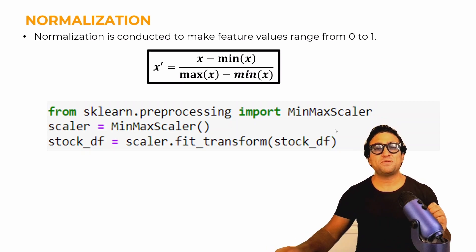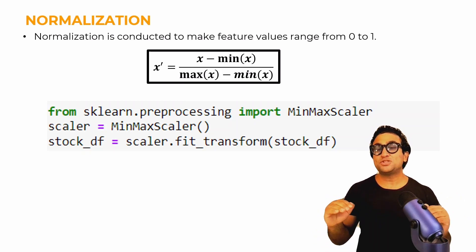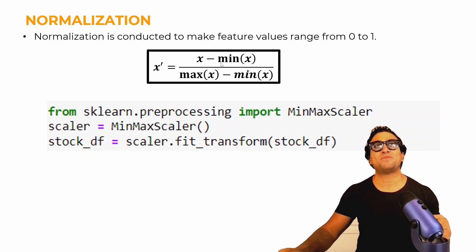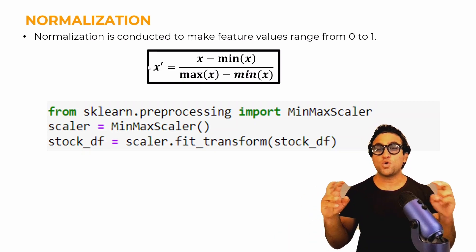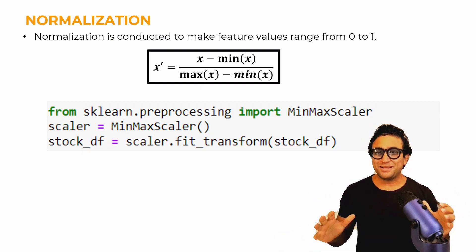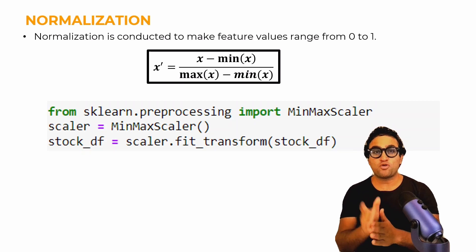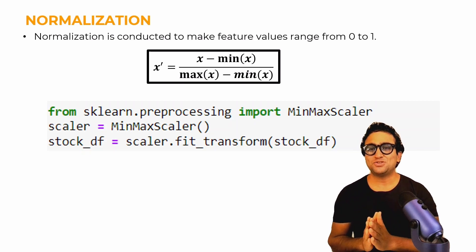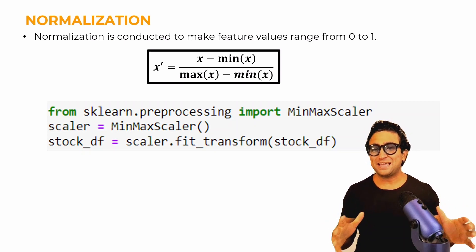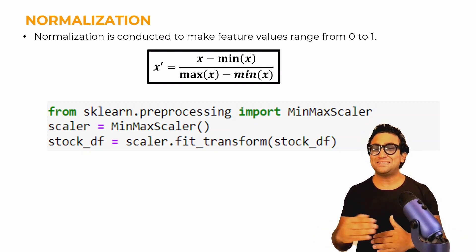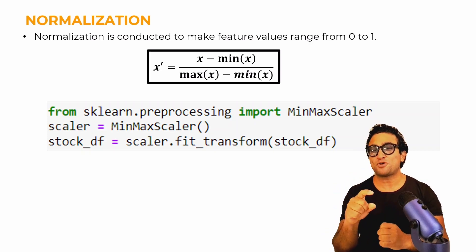To calculate that, the equation is simple: take any number, subtract the minimum value, and divide by the maximum minus the minimum — so (x - x_min) / (x_max - x_min) — and that gives the normalized value. Luckily, I don't need to write that equation manually. All I need to do is leverage the scikit-learn library, and I'll show you a detailed code walkthrough at the end of the video.